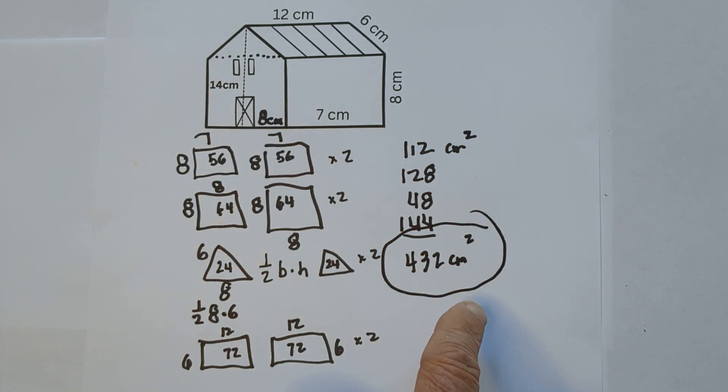It's a small little barn because it's in centimeters. It's a toy barn and it's going to be 432 centimeters squared. I hope that was helpful and remember kindness multiplies kindness, be kind to someone today.